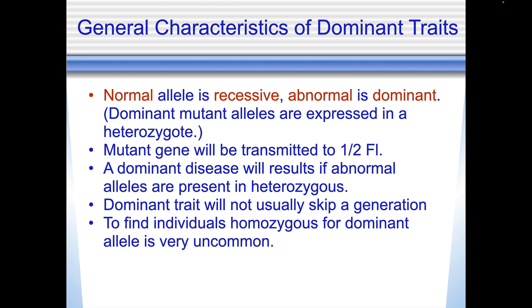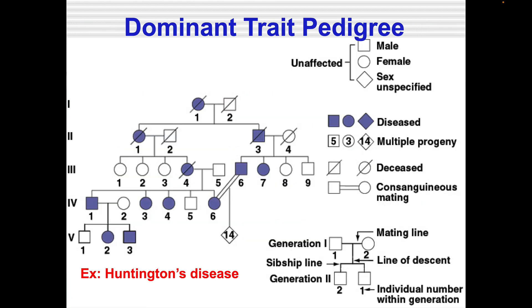Finding individuals homozygous for dominant disease disorders is very uncommon. Here is an example of a dominant trait pedigree. You've got unaffected ones, but in the first generation there's an affected individual and it passed on — you can see one half of the offspring did end up getting it. Then one out of four got it in generation three from one couple, and two out of four from the next couple, and more individuals ending up with it in the next generation. This is an example of Huntington's disease.